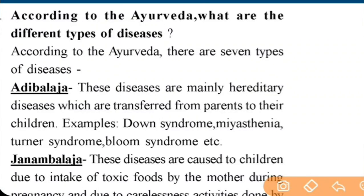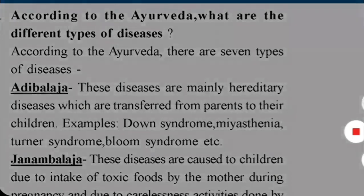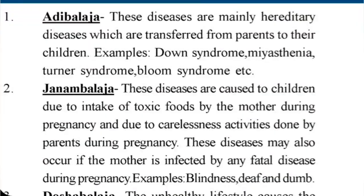Welcome students. Now I will explain the different types of disease according to Ayurveda. This is an important topic. According to Ayurveda, there are seven types of disease. The first is Adhiblaj.